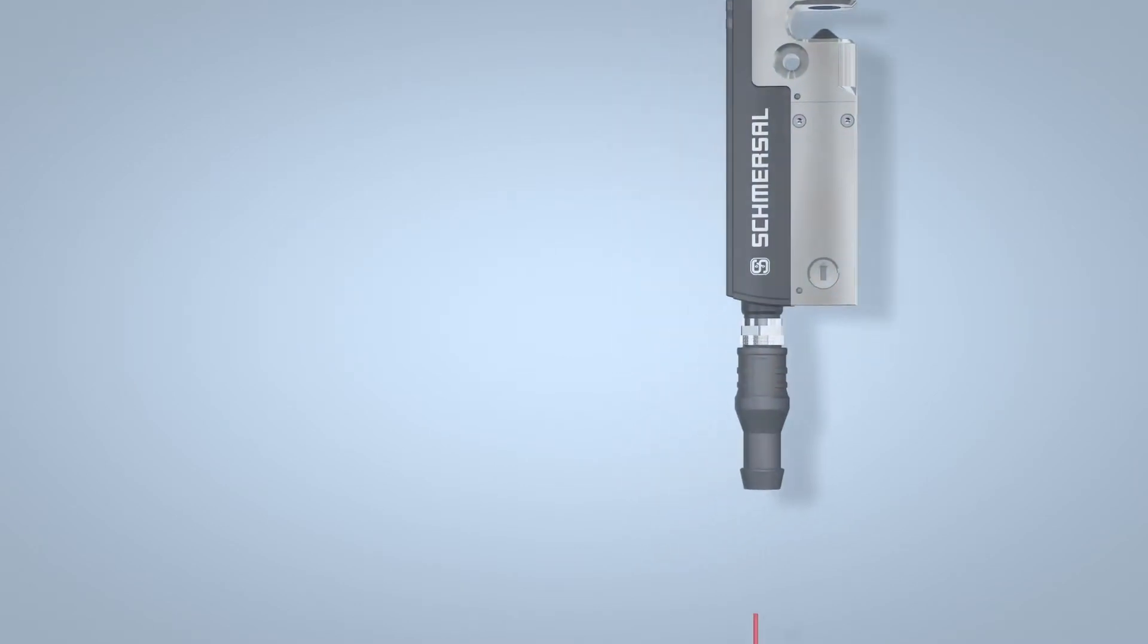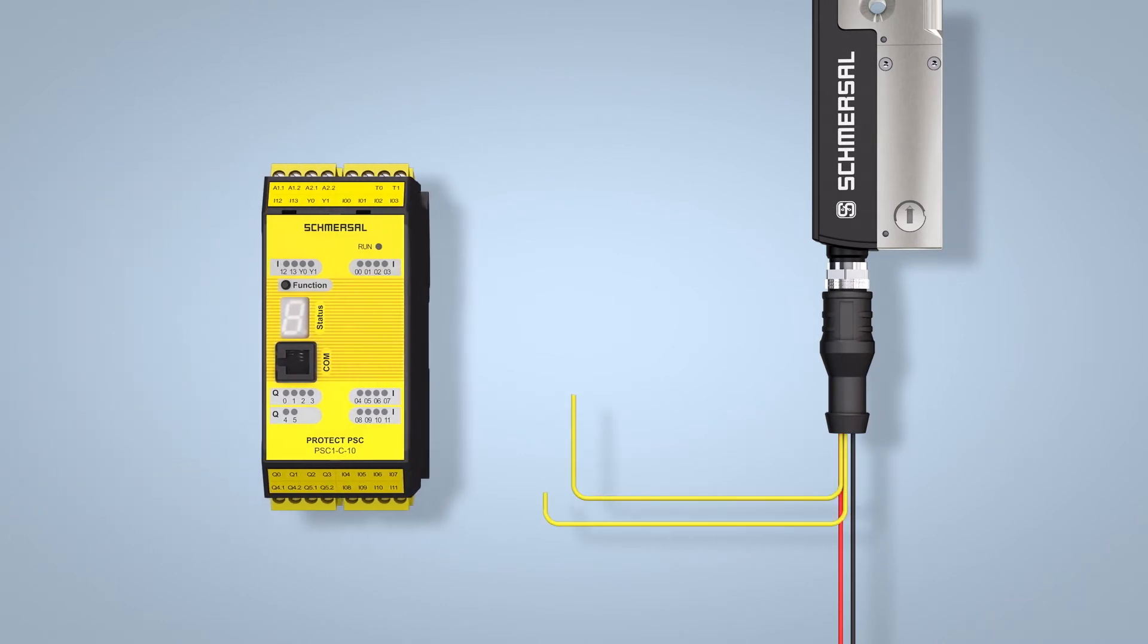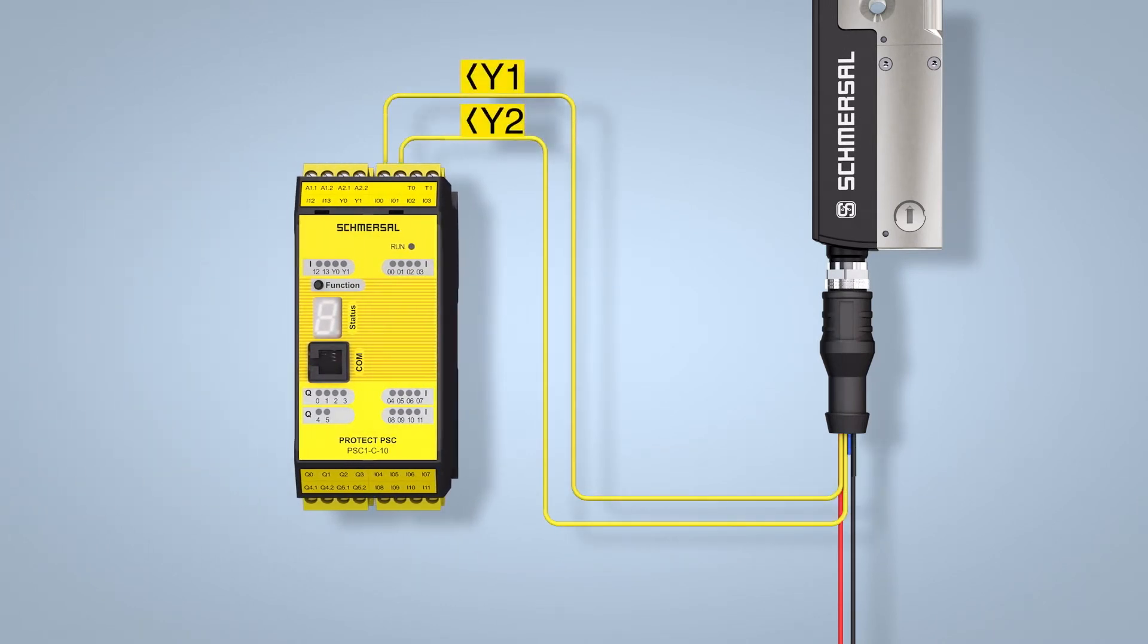Once the 24V supply voltage has been applied, the solenoid interlock makes two safety outputs available for connection to a safety monitoring module as well as a diagnostic signal for a PLC. The solenoid interlock is unlocked by activating the bistable magnet. If the solenoid is not actuated, the system remains in the locked state.